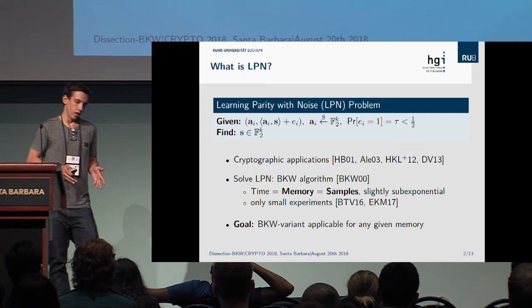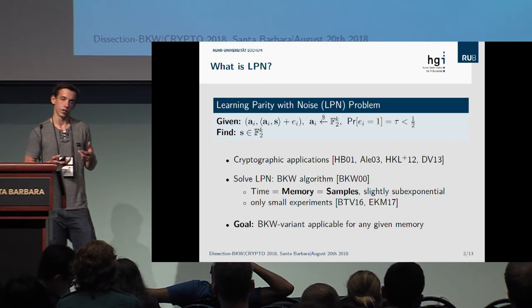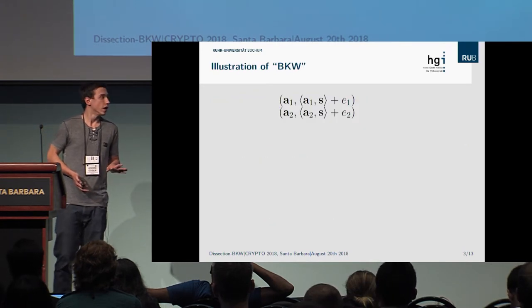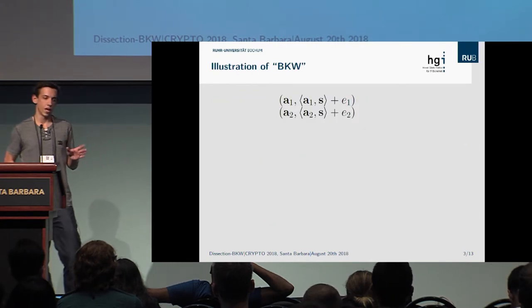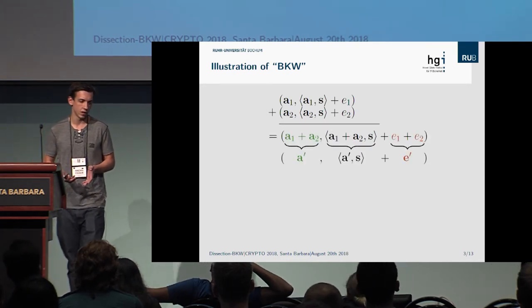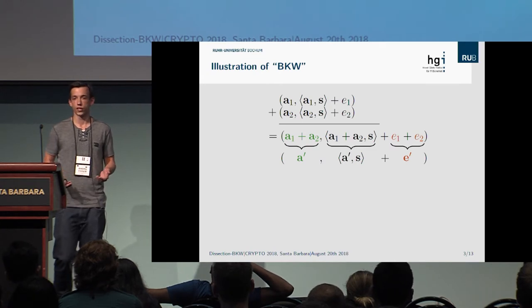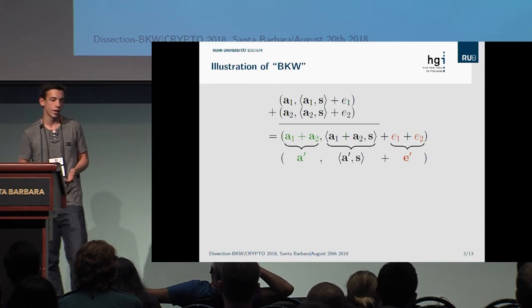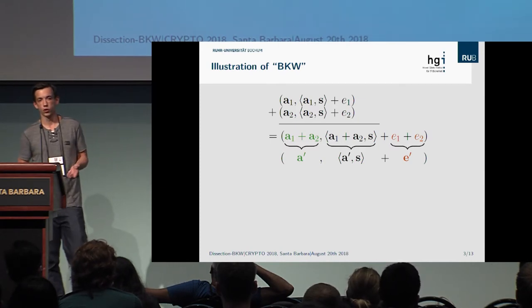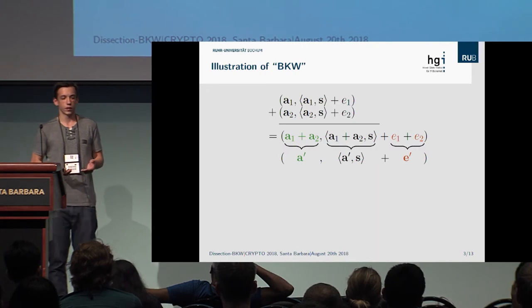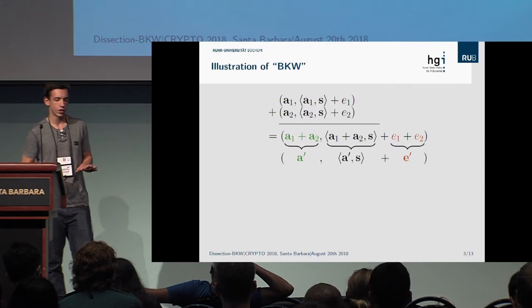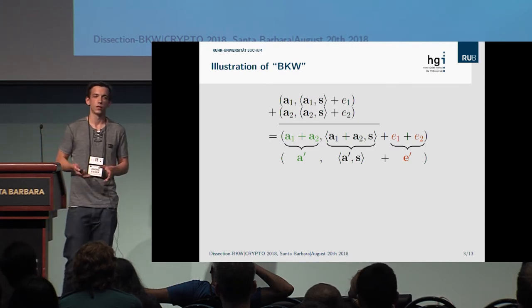I will illustrate the BKW algorithm, or a slight variant thereof. Its core idea is: if we are given two samples A1 and A2 with corresponding labels, we can simply add these samples component-wise to obtain a new sample. This follows from the linearity of the scalar product. The new error term E prime, which is the sum of both previous error terms, is one with a higher probability than before, but we can keep in mind that we can add samples to create new ones.